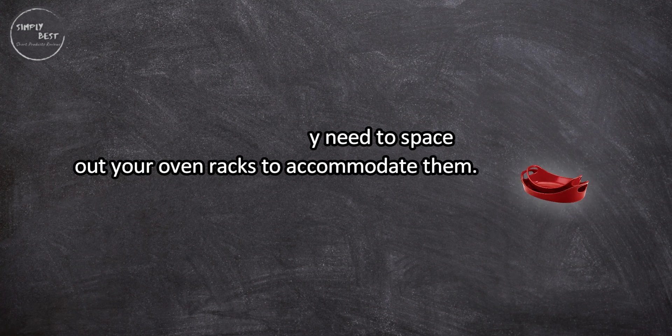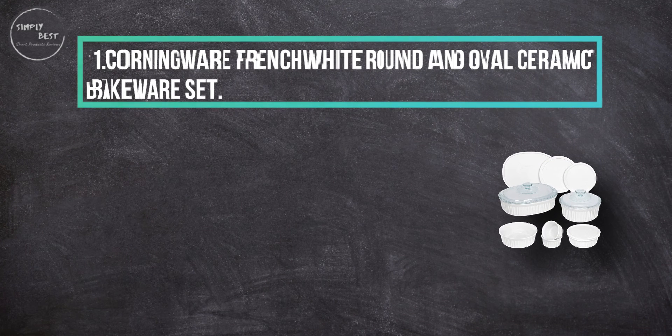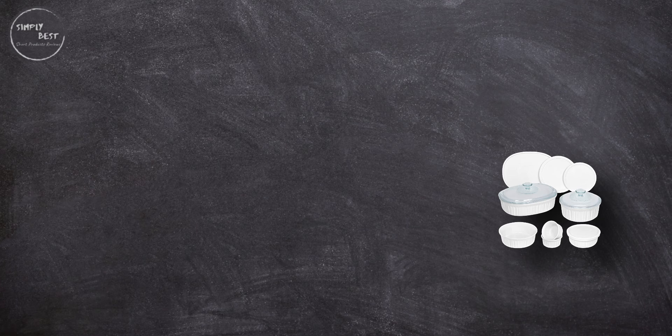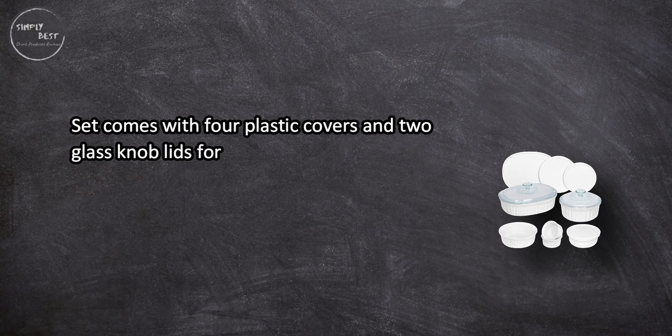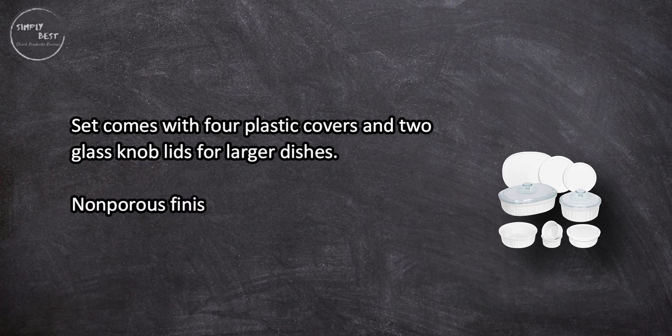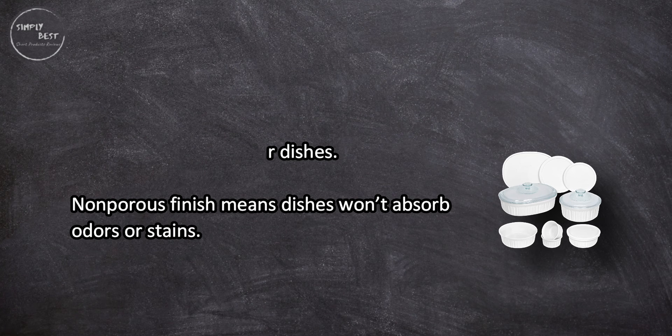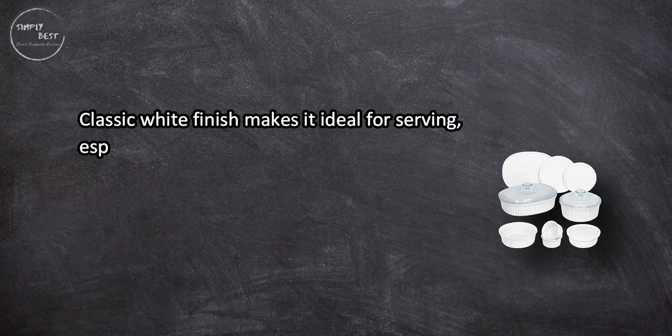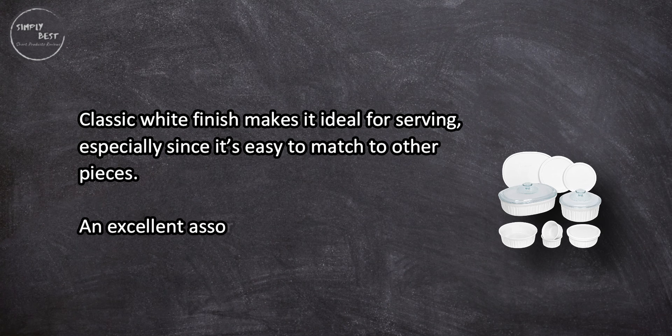At number one, CorningWare French white round and oval ceramic bakeware set. Set comes with four plastic covers and two glass knob lids for larger dishes. Non-porous finish means dishes won't absorb odors or stains. Classic white finish makes it ideal for serving, especially since it's easy to match to other pieces. An excellent assortment.